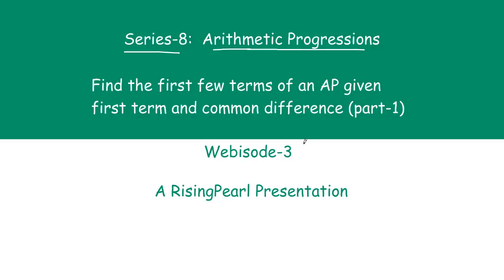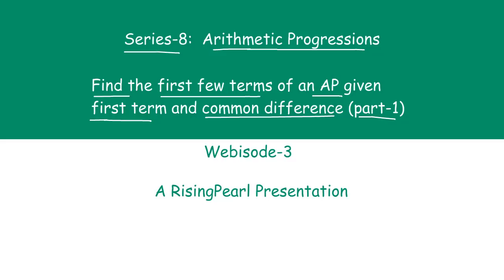Friends, this is episode number 3 and today we are going to take a look at how do we find out the first few terms of an arithmetic progression if we are given the first term and the common difference. So we are saying this is part 1 because this is the first part where we are taking a look at solving some of the questions on arithmetic progressions.